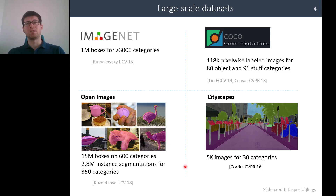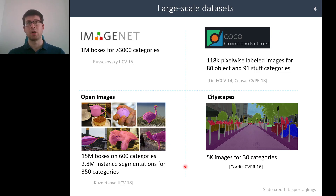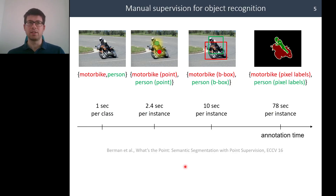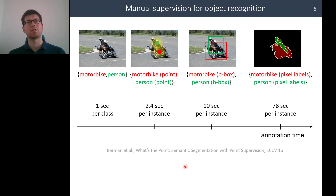One trend you may observe is that when we have more detailed annotations — such as in Cityscapes — we have fewer images and fewer categories. Looking at this more closely, we can see different levels of annotations. Essentially, when we want more detailed annotations, this takes more time and is more costly.